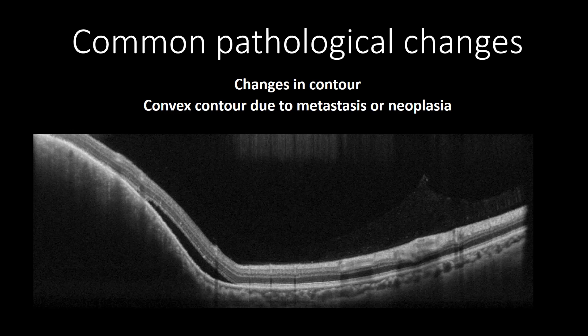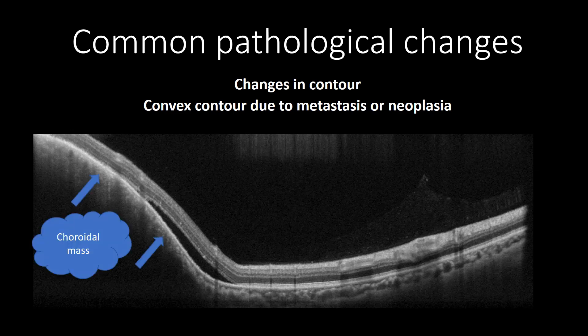This OCT cross-section shows choroidal metastasis from breast cancer, appearing as a hypo-reflective mass pushing the retina and changing the retinal contour into a convex shape, along with the presence of subretinal fluid, which may indicate exudative activity from the metastasis.